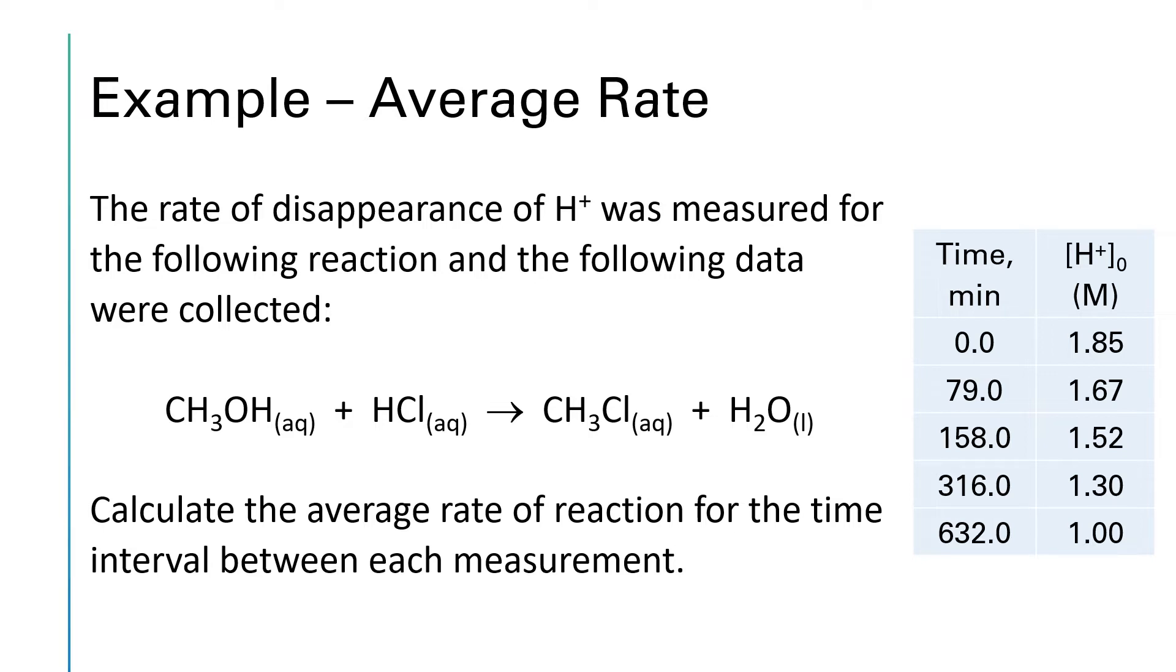Well, we can look at some of these average rates for the chemical reaction that's given here, the reaction of methanol with hydrochloric acid to give chloromethane and water. And what we're given data wise is time and the concentration of acid, right? The H+ ion there in the table comes from the HCl. And so what we can do is pick various time intervals and calculate what the average rate of reaction for the time intervals are. To give myself a little more room to write, I'm going to actually work this out on the next slide.